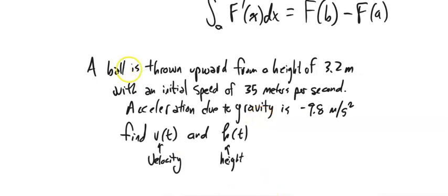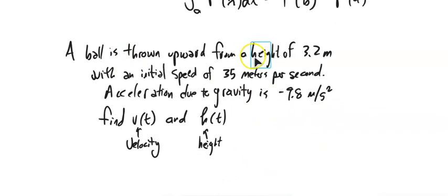A ball is thrown upward from a height of 3.2 meters with an initial speed of 35 meters per second. Acceleration due to gravity is negative 9.8 meters per second squared. That's an acceleration, meters per second per second, and it's negative because it's pulling downward against the height.